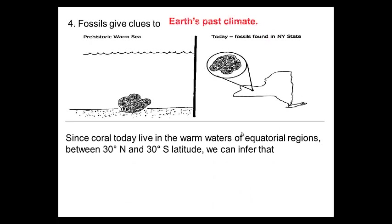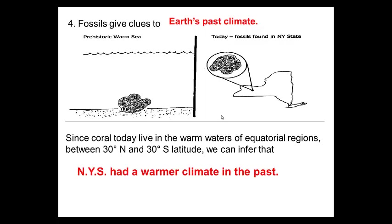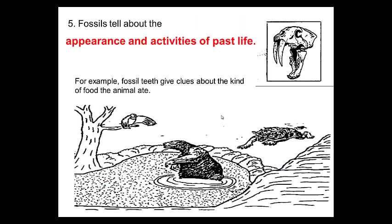Fossils give clues to the Earth's past climate. If we find fossils upstate New York of coral and palm trees, we can tell that New York used to have a very warm tropical climate. Coral usually lives in equatorial regions between the equator and 30 degrees north or south, and we see those types of things up here in New York — so we can tell New York used to be near the equator. Fossils also tell us about the appearance and activities of past life. Check out this guy — he's got some big teeth, so he certainly was a meat-eater.